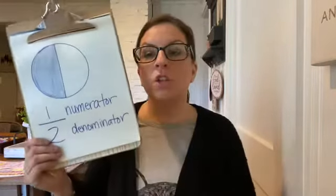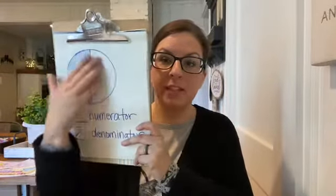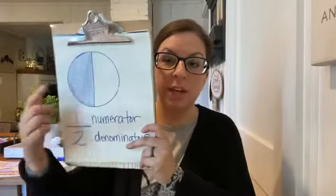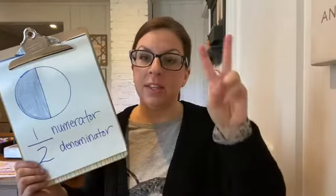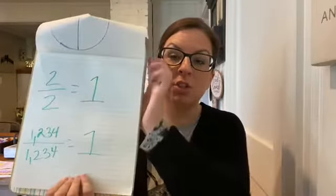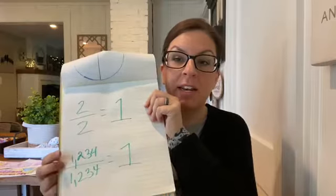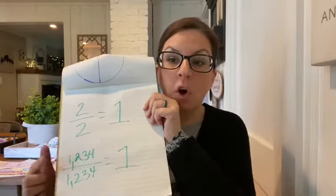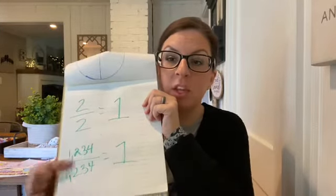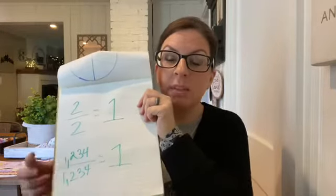In a fraction, if you had both sides shaded in — let's say it was cut into 2 pieces but both sides were shaded in — you would have 2 over 2. Anytime the numerator and the denominator are the same, they equal 1 whole. So if your fraction is 2 out of 2, it equals 1 whole. What if your fraction is 1,234 out of 1,234? It still equals 1 whole — your 1 thing is divided into 1,234 pieces, and if all 1,234 pieces are shaded in, it equals 1 whole. Anytime the numerator and the denominator are the same, they equal 1 whole.